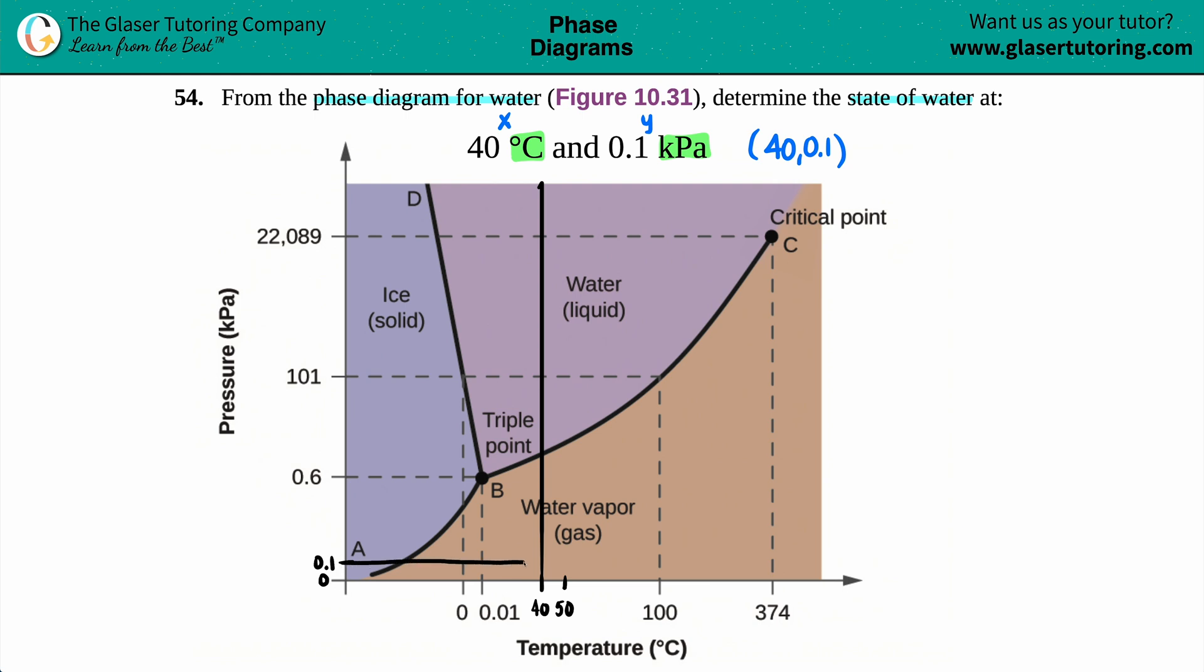There you go. I'll erase all this because X marks the spot. This is where you're at: (40, 0.1). Since it's in the brown area, the water is going to be a gas.